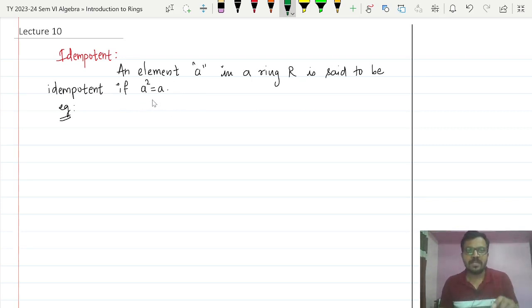Now A square means A multiplied by A. Let us try to understand it through an example, Z6. How many elements are there in Z6? Six, naturally starting from 0 bar up to 5 bar.